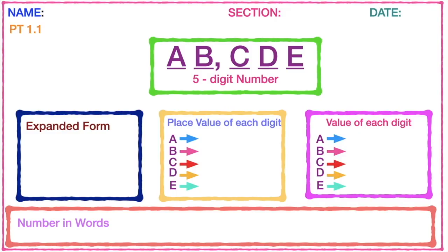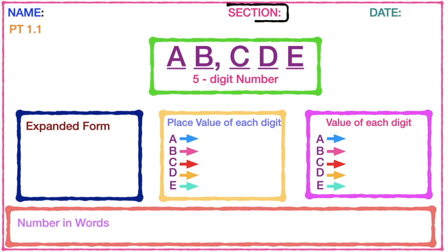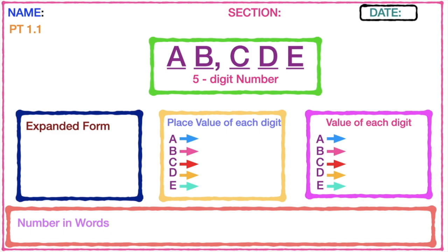This is the example and format of your Performance Task 1.1. First, you're going to write your name at the upper left, then your section, and the date — today is August 10. After that, write PT 1.1 at the bottom of your name.